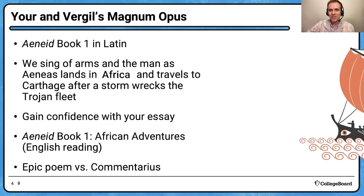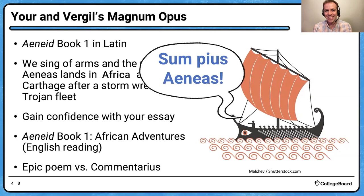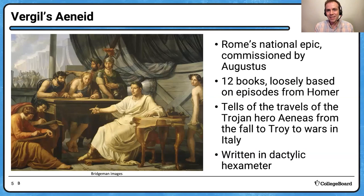It looks like we are joined here by an image of Aeneas — hopefully pre-storm, or maybe after he's regained his fleet, traveling in Book Five or Six. Let's talk a little bit about Virgil's Aeneid. This is really one of my favorite — if not the favorite — works of literature, one of the world's treasures. This is Rome's national epic.